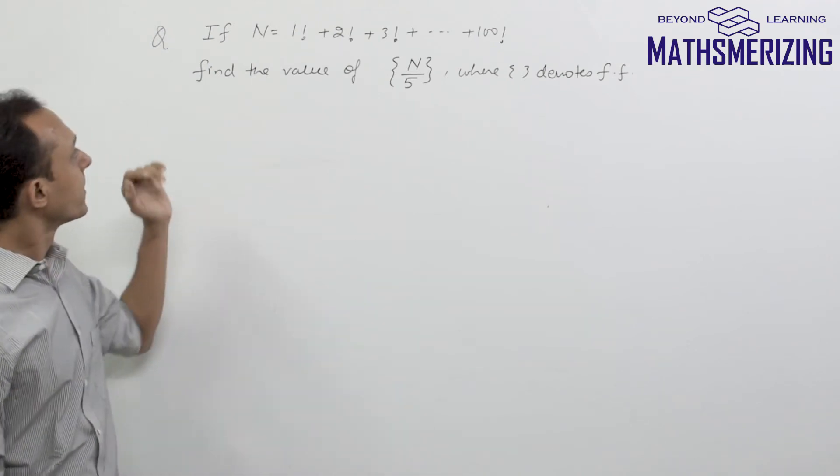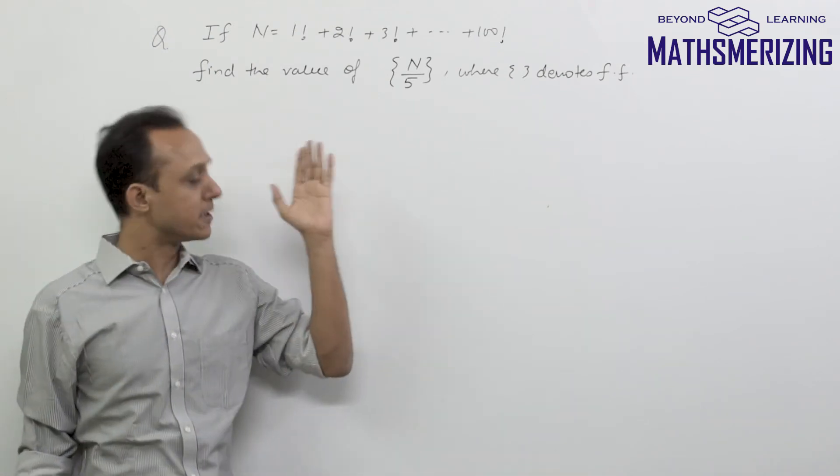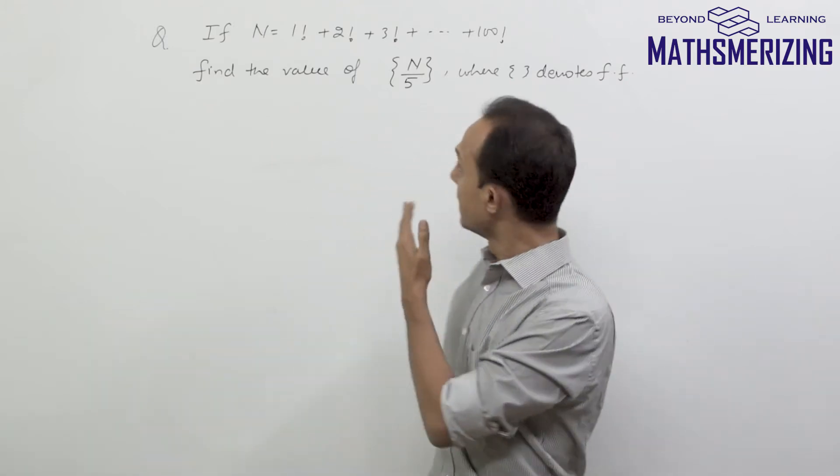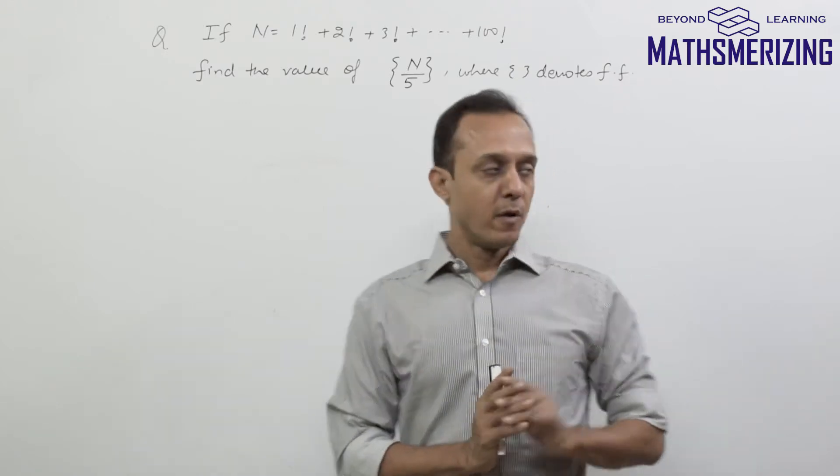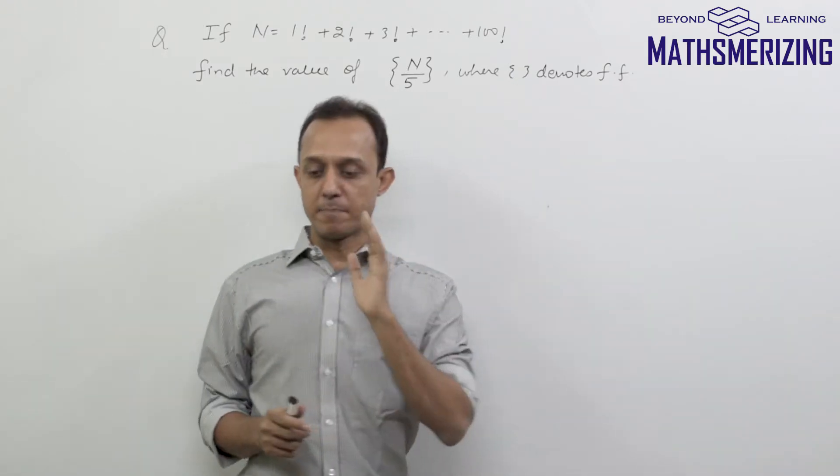Let us take up another question. The question is: if n is defined as factorial 1 plus factorial 2 plus factorial 3 up to factorial 100, then we need to find the value of fractional part of n by 5, where these brackets represent the fractional part function.